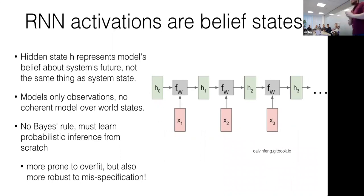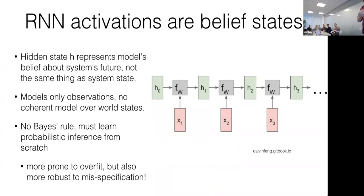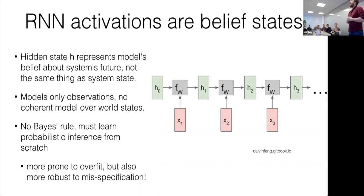You guys all agree that the hidden state of an RNN is not the same thing as a latent variable in a latent variable model or a posterior over variables — not in any logical way. Any discerning consumer of machine learning should ask: why not just use an RNN? My basic argument is that RNNs don't have to use Bayes' rule to update their beliefs; they have to learn both the likelihood of observations and how to update beliefs from data from scratch. This makes them more prone to overfitting, but also more robust to model misspecification — which is actually a huge advantage.